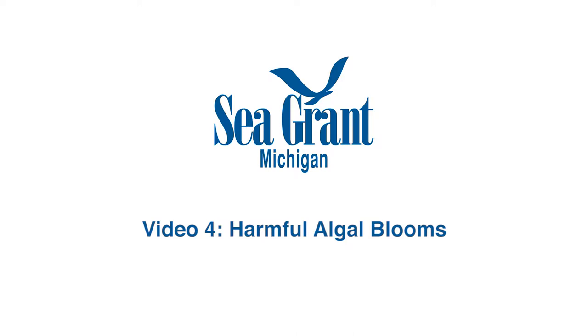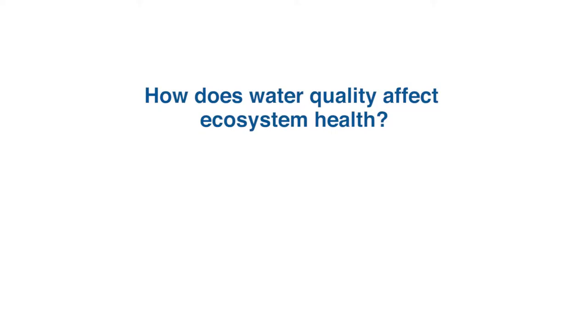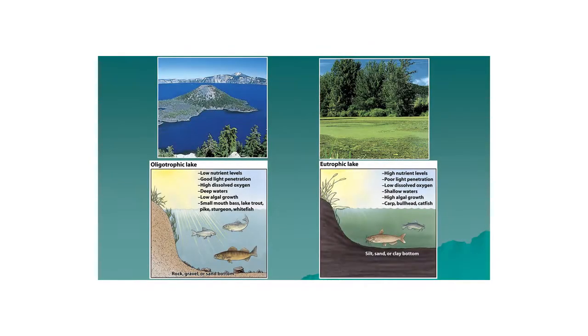Thinking about overall ecosystem health and how water quality affects it, the first thing to understand is that ecosystems are very dynamic. They're changing all the time — over seasons and within a season. But over time, if a system is stressed long enough, either because it has too much or too little of something, or something else is competing with it — like dandelions competing with your grass — you're going to see a shift in how that system is functioning.